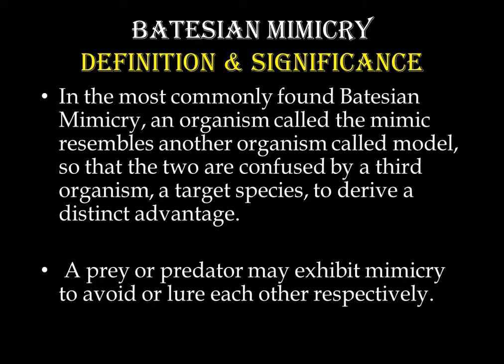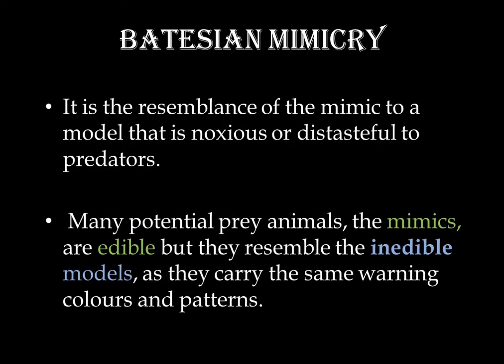First of all, Batesian mimicry — definition and significance. In most commonly found Batesian mimicry, an organism called the mimic resembles another organism called the model, so that the two are confused by a third organism, a target species, to derive a distinct advantage. In this type of mimicry, a prey or predator may exhibit mimicry to avoid or lure each other respectively. It is the resemblance of a mimic to a model that is noxious or distasteful to predators. Many potential prey animals, i.e. the mimics, are edible and they resemble the inedible models as they carry the same warning colors and patterns.